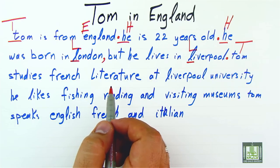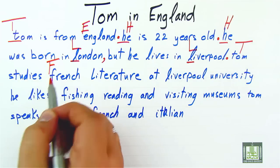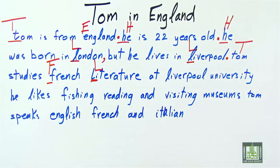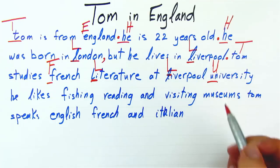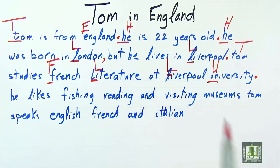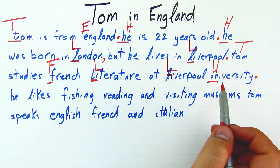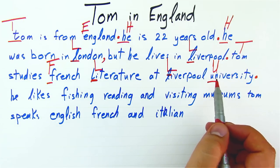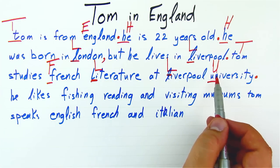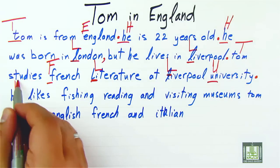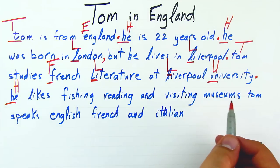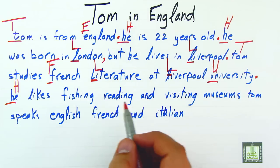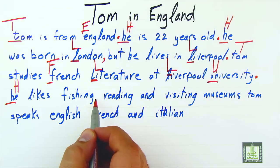He lives in Liverpool — again it is the name of a city, full stop. Tom, again a new sentence and a proper noun, capital T. Tom studies French Literature — because this is a branch of study we have to capitalize it — so 'French' and 'Literature.' At Liverpool University, full stop. Notice that 'University' alone is not capitalized usually, but when it comes with the name of the university we capitalize it.